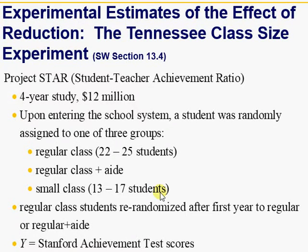In this video I am going to explain the STAR project data. It was a four-year study carried out in Tennessee. There were three class sizes: a regular class size of 22 to 25, a regular class plus aide, and a small class size of 13 to 17 students. It was basically an experiment to study whether there is an improvement in learning achievements of students. There were 80 schools and roughly 12,000 students participated.